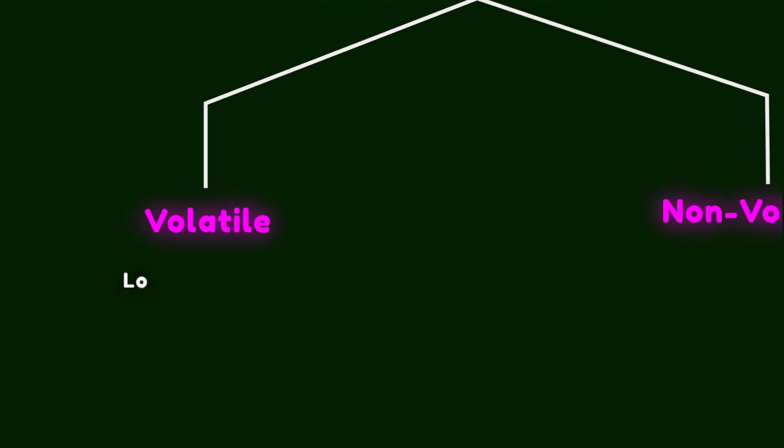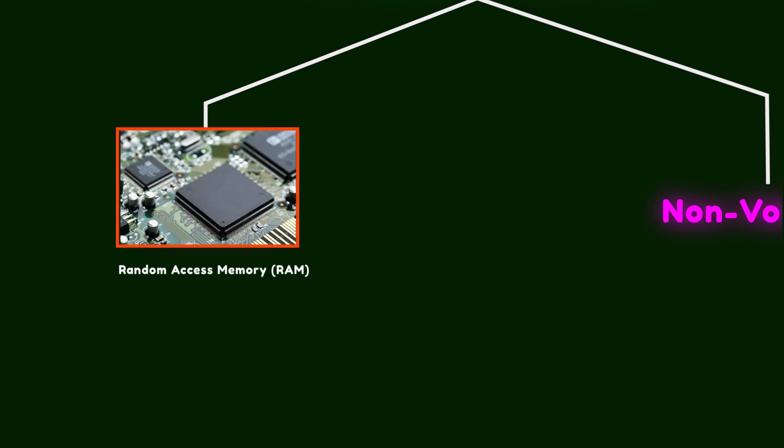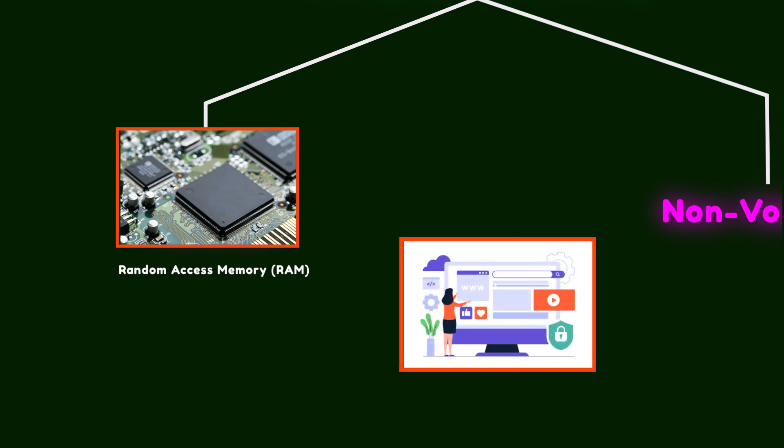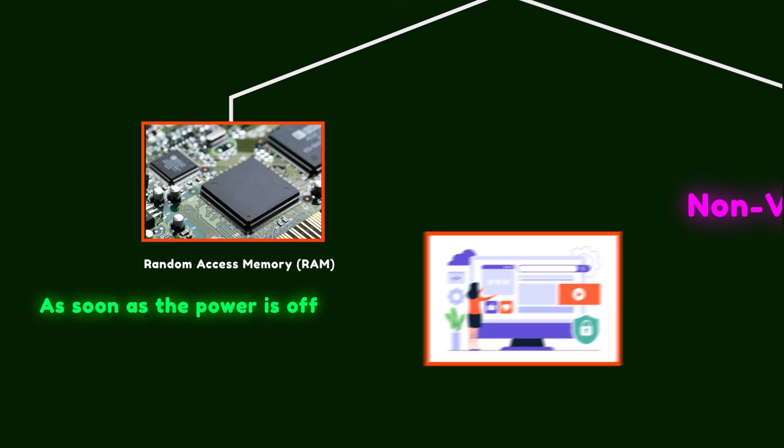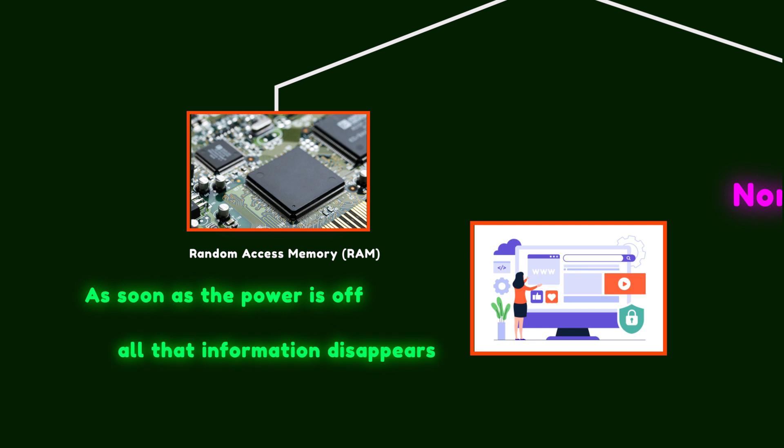Now let's see how this concept can take memory devices to another level. Computer memory is divided into volatile and non-volatile types. Volatile memory loses data when the system shuts down and needs a constant power source to retain information. Take random access memory as an example. You use it every day. Imagine loading an application and then browsing the internet. Random access memory allows you to quickly switch between these tasks and keep track of where you are in each one. But as soon as the power is off, all the information disappears.